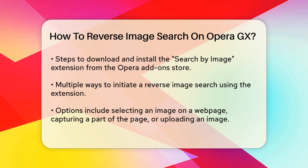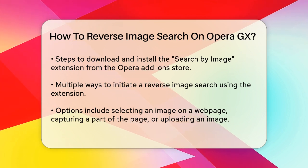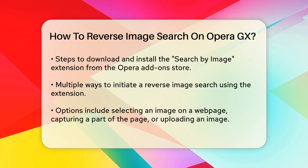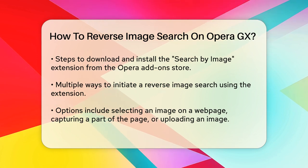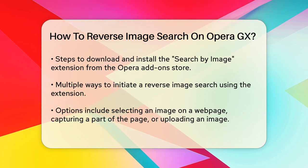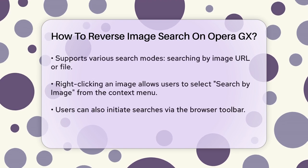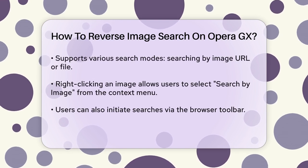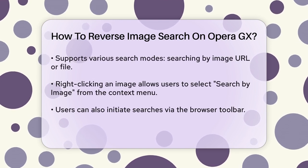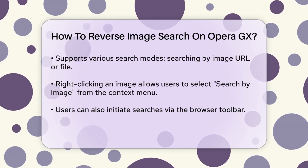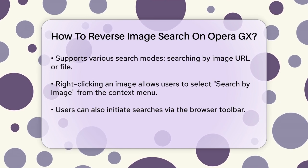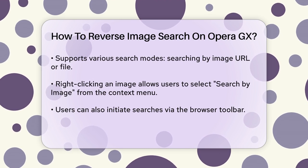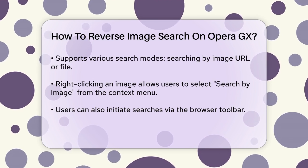Once installed, you'll have several ways to initiate a reverse image search. You can select an image on a web page, capture a part of the page, or even upload an image from your device. The extension supports multiple search modes — for example, you can search with the image URL, or select the image file itself, which is useful for sites that don't allow direct linking of images.